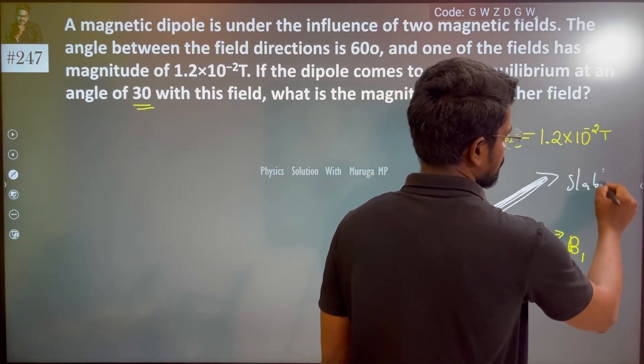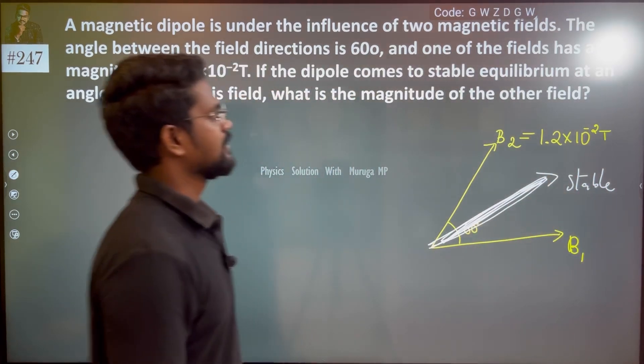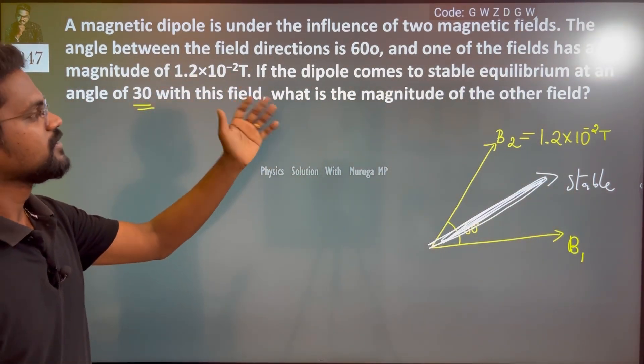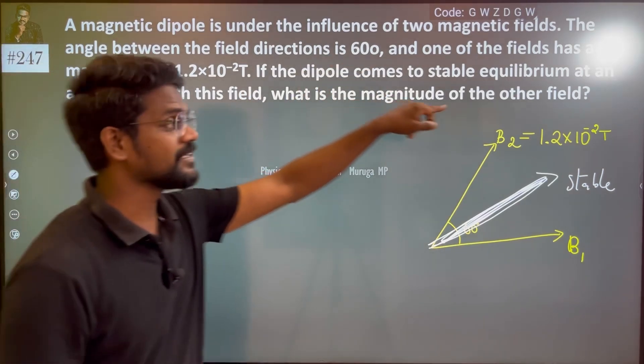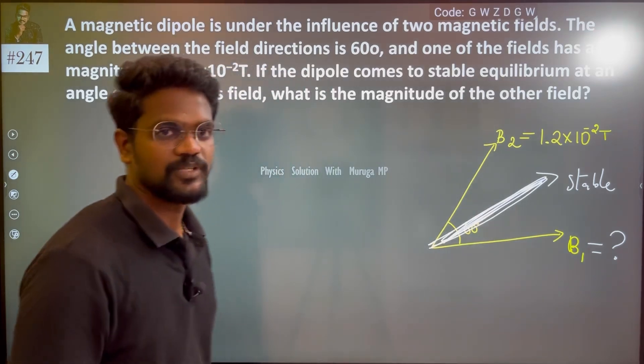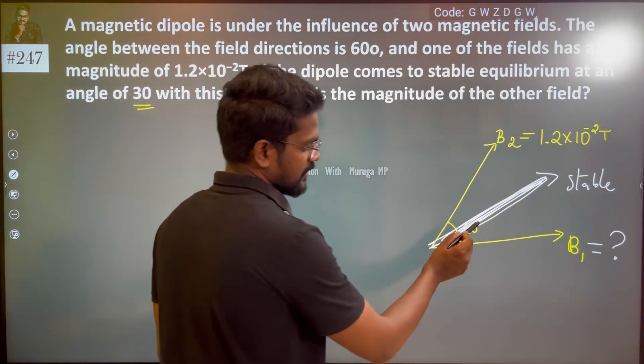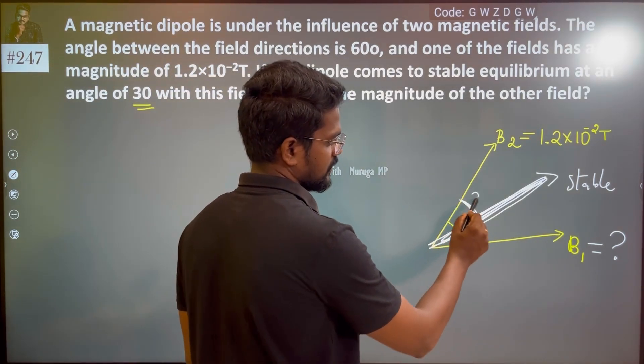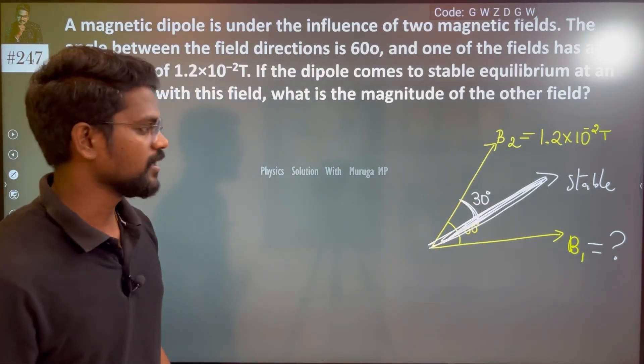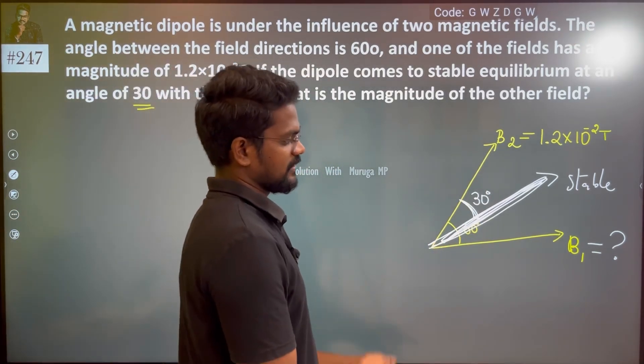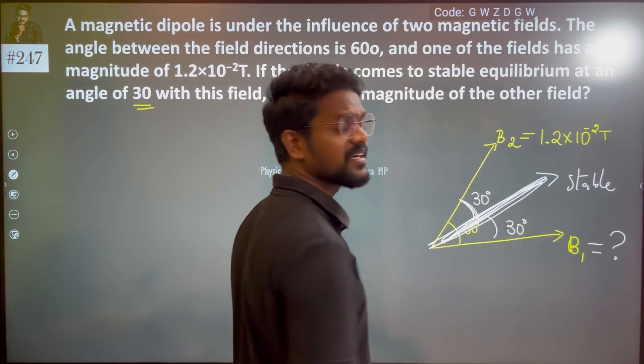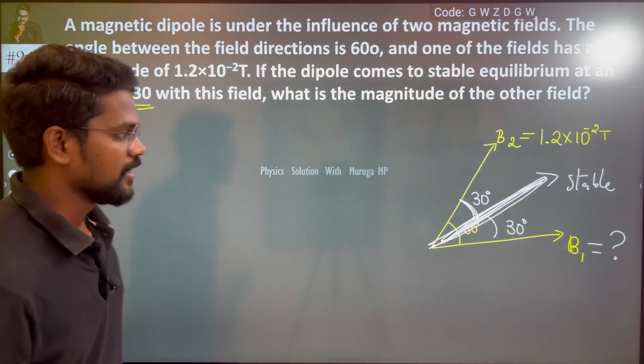So what is the magnitude of the other field? This is one of the fields at 30 degrees. Obviously, it is very clear that 60, 30, this is in the middle. The question is about stable equilibrium.